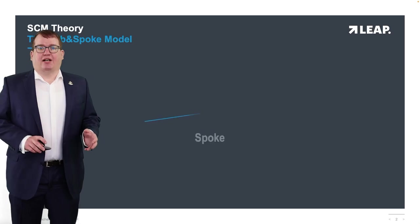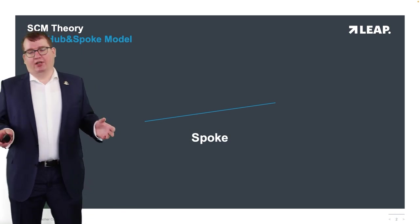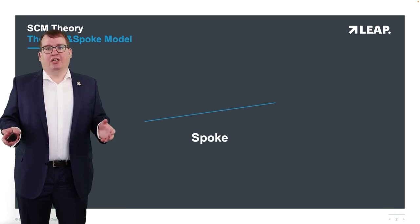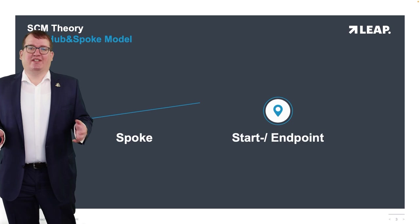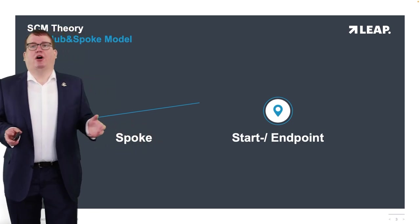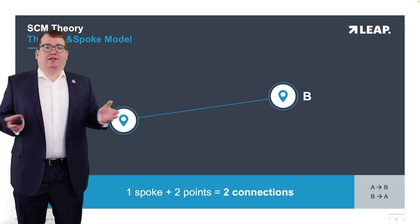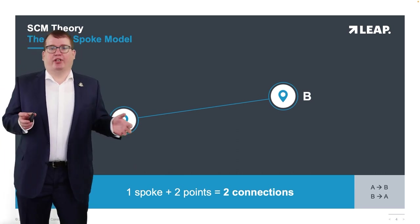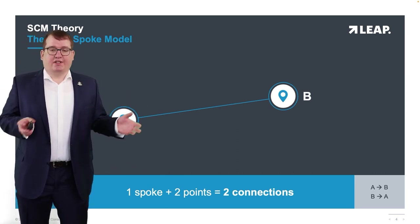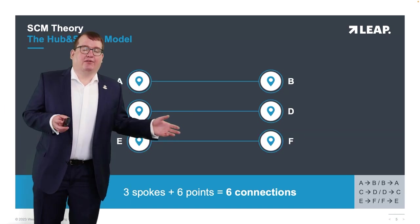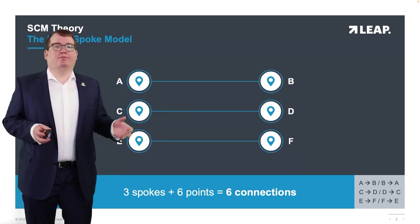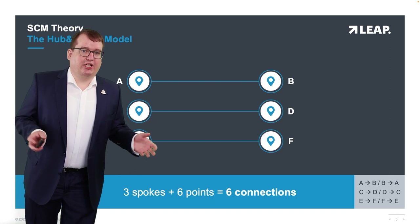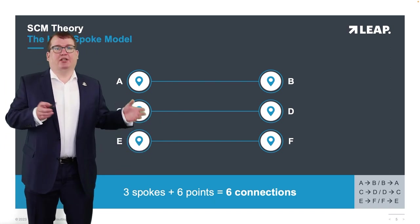Let's start with some theory — the hub and spoke model. A spoke is a transportation movement of goods between a start and an end point; it's a means of transportation traveling on this lane, equaling a start point, an end point, and the spoke in between — two connections, A to B and B to A. When we triple this, we'd have A to F as end points and three spokes in between, equaling six connections: A to B, B to A, C to D, and so on.